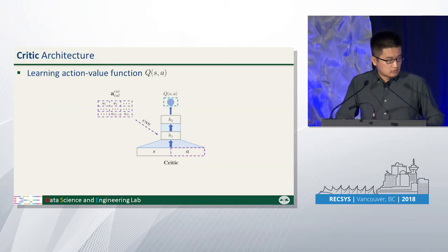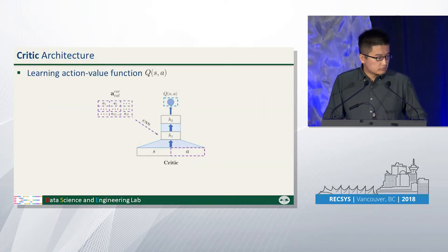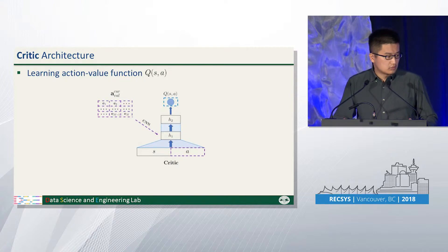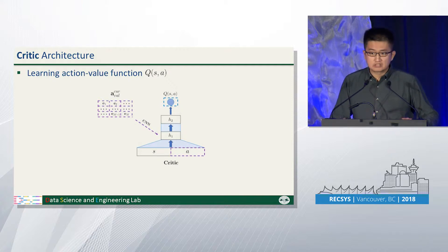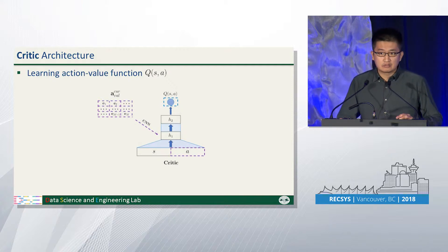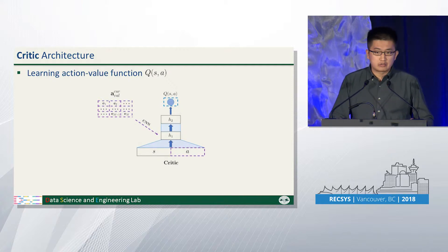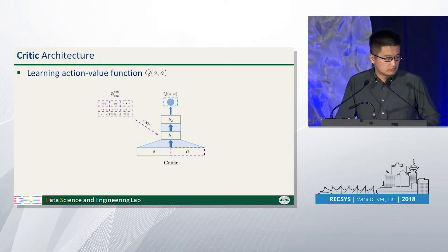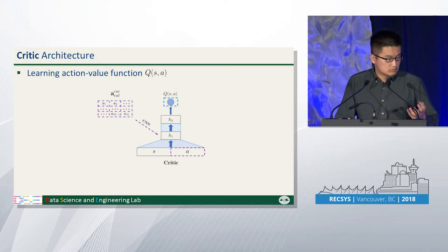The goal of the critic architecture is to learn an action value function, which is a judgment of whether the recommendation matches user's preference and whether this page of recommendations will lead to a higher long-term reward. We use a similar architecture as the actor architecture.